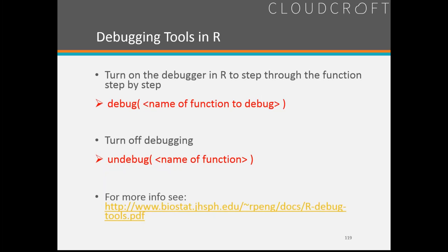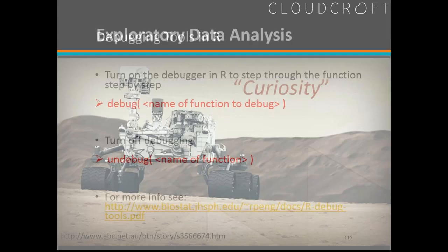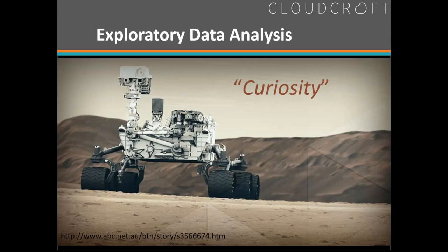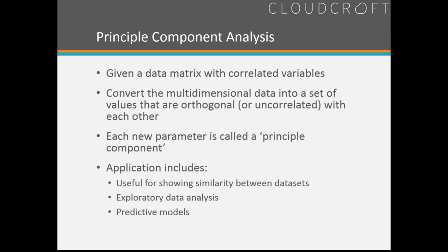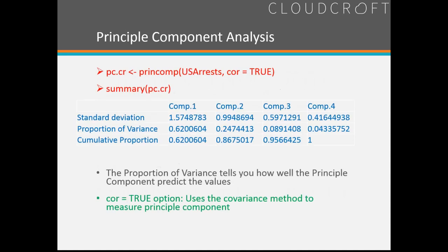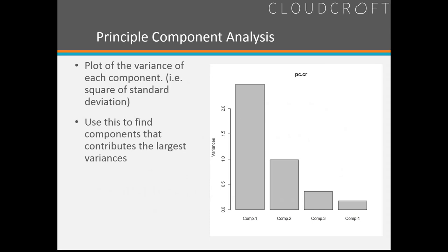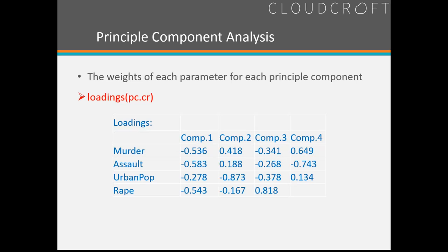Debugging tools — we're looking at the function to debug, can turn debugging on and off. Exploratory data analysis — why? Curiosity. Some initial ways include principal component analysis, decision trees, network analysis, or self-organizing maps (SOMs). Given a data matrix with correlated variables, we can convert it into something we can analyze. Using principal component analysis, we do initial values and split things into where we have the largest variance. Here, component 1 seems to have the maximal effect — we're looking at crime results: murder, assault, urban population, rape.